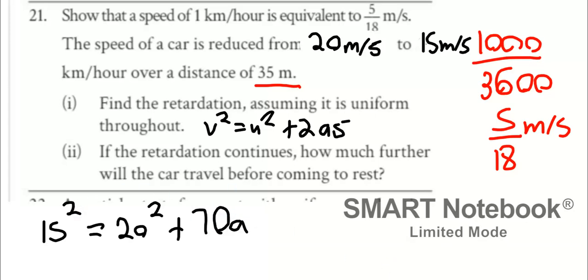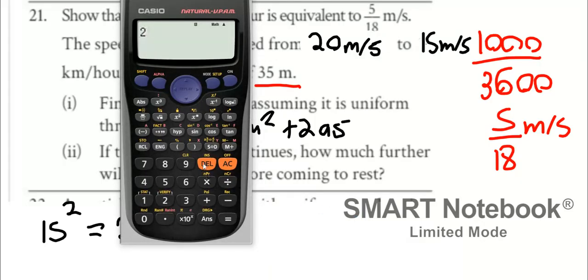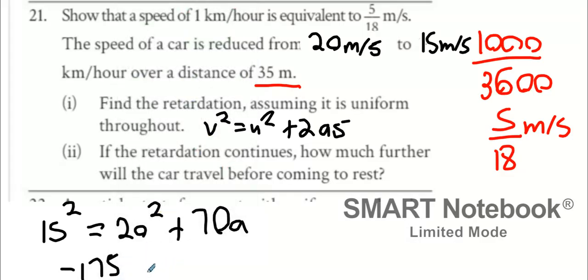I'm going to do 15 squared take away 20 squared. I'm going to get minus 175. It happens to equal 70a. Therefore, a must be minus 2.5 meters per second squared.